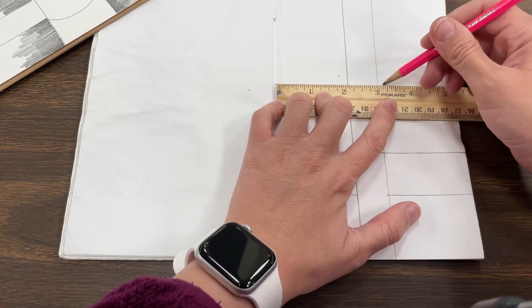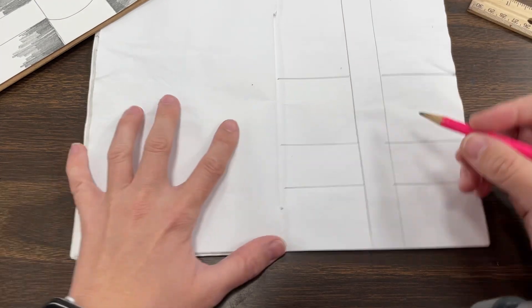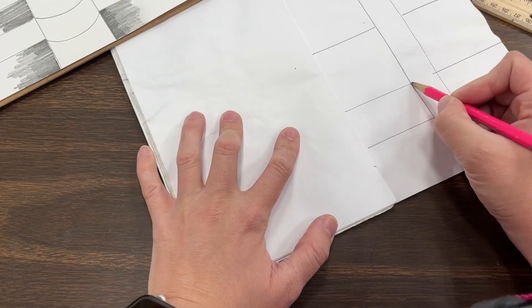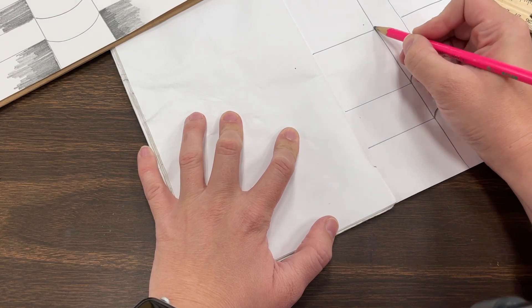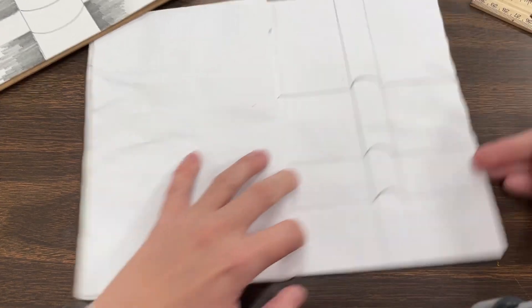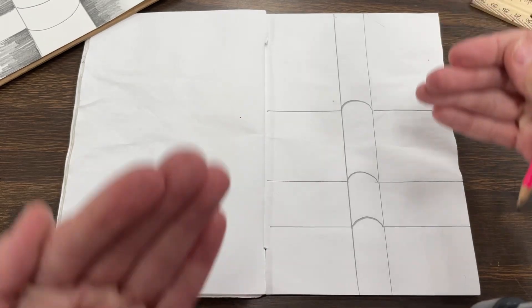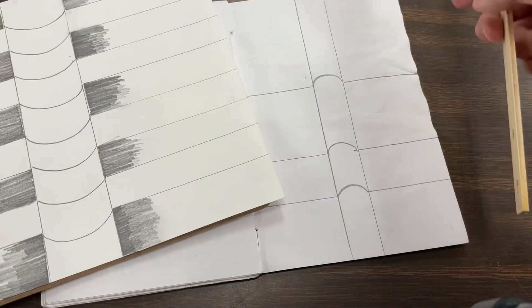See this? Now I'm going to connect these lines with a curve and I want that curve to be the same on all of them. The optical illusion starting now, starting to see it.